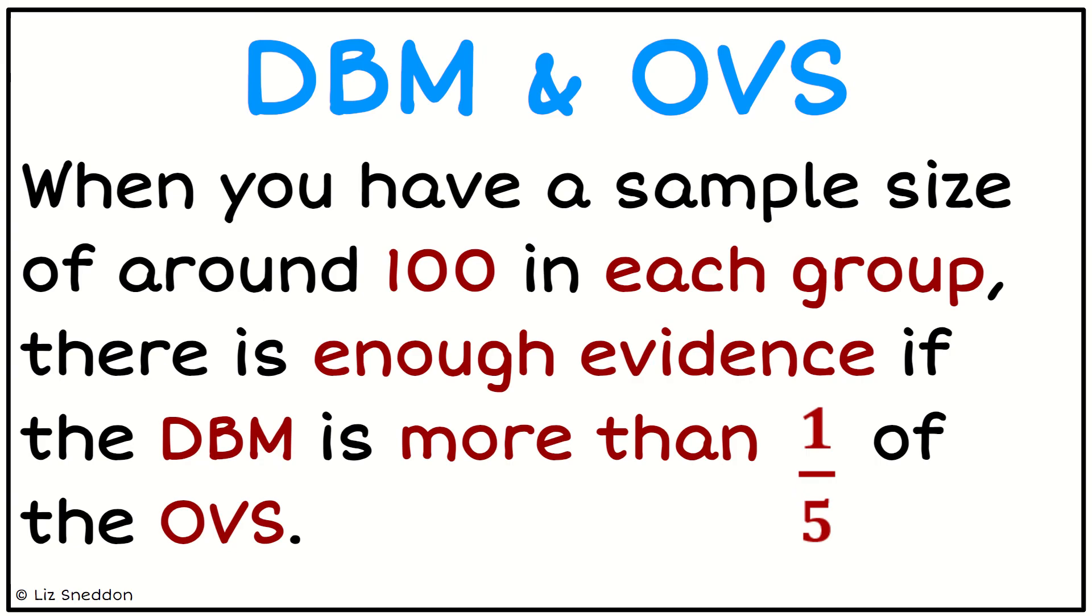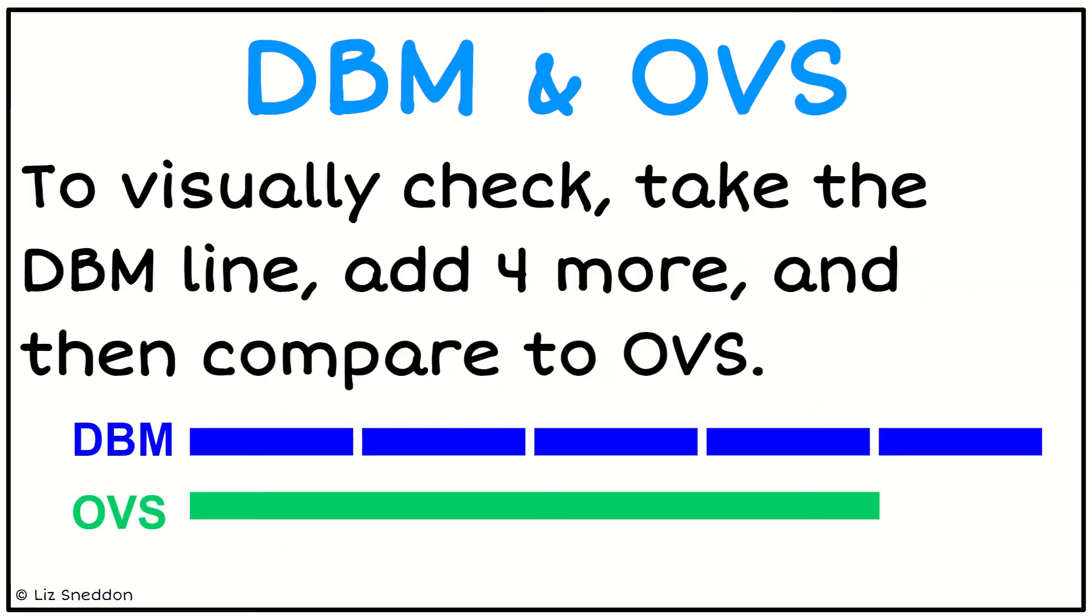If we've got a sample size of around 100 in each group, then there will be enough evidence if the DBM is more than one-fifth of the OVS. Visually, we would take the DBM, the bar on the left-hand side, and make four more copies. I want to compare that distance to the OVS line. If you look at the DBM, I've got five of them, so we're looking to see which one's bigger or smaller.